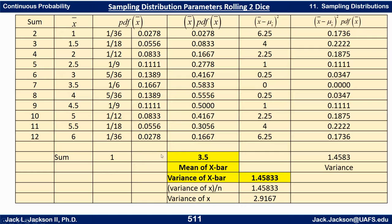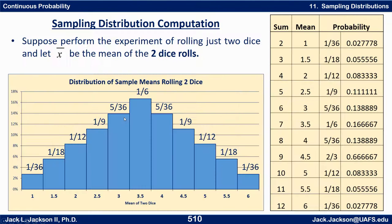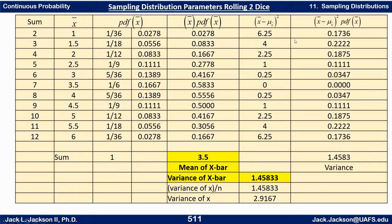It's pretty clear to see that this distribution is less variable — more close to the center — than bars that go straight across. So we're going to have a smaller standard deviation. To find the variance, we take each x-bar minus 3.5, square it, multiply by the probability, and add those up. The variance turns out to be 1.45. The variance of x was 2.9, which is twice 1.45. So if we divide the variance of the x's by the sample size, we get the variance of the sample means.